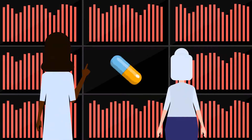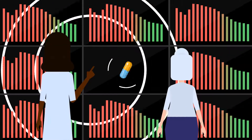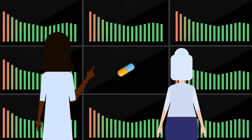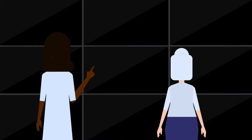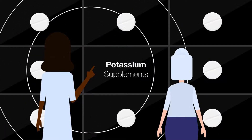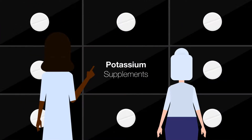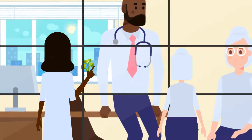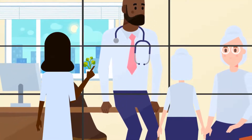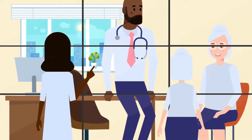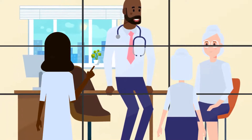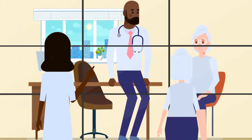Often side effects improve by lowering the dose of medicine, and some may go away over time. Low potassium can often be treated with potassium supplements, but you should still report any new symptoms to your doctor, especially if they occur after starting Chlorthalidone or increasing your dose.